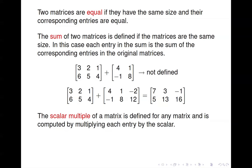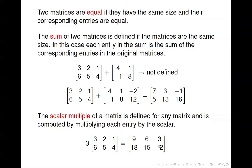We can compute the scalar multiple of a matrix in the same way we compute the scalar multiple of a vector — we just multiply each entry by that scalar. Here's an example: multiply 3 times each entry in this matrix, and we produce this one.